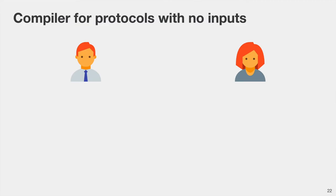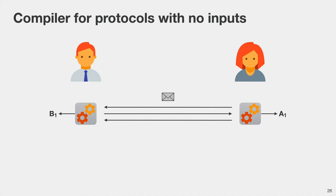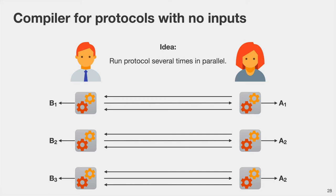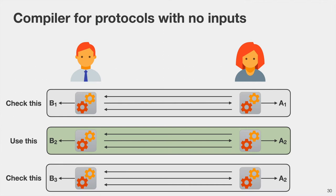Let us start with the compiler for protocols with no inputs. Alice and Bob have black-box access to some passively secure functionality. To execute the protocol they exchange messages and Alice obtains output A1, Bob obtains output B1. Because the protocol is only passively secure, Alice could potentially send a maliciously formed message, resulting in Bob producing an incorrect output. Our first idea is to execute the protocol many times in parallel, using some executions as checks on honest behavior and one execution to produce the actual output. The hope is that Alice can do no better than randomly guess which execution will be checked, giving her a probability of one-third of successfully cheating.